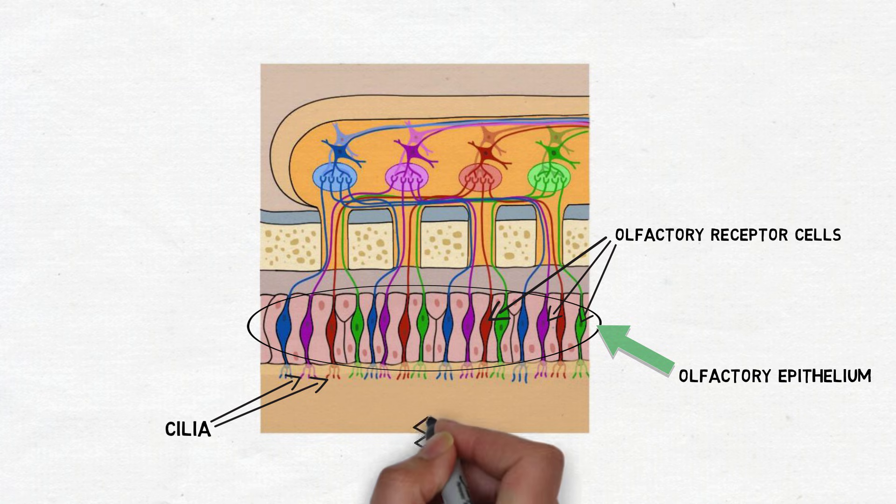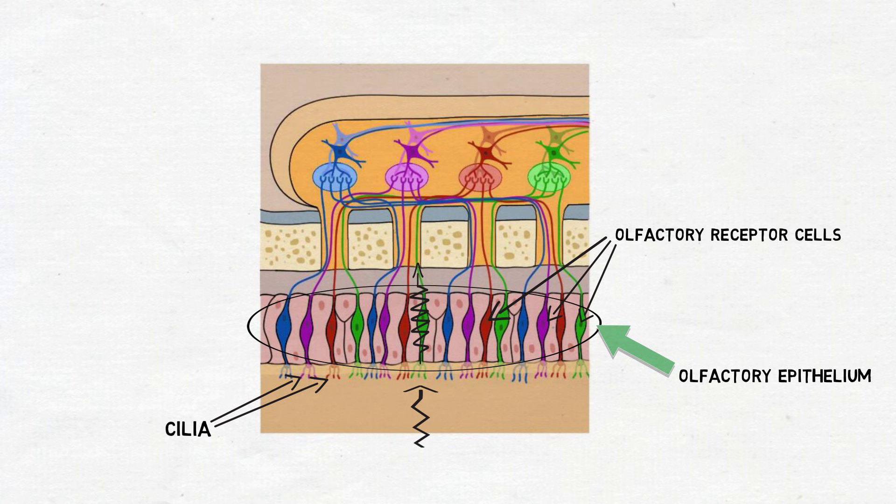When odorants enter the nasal cavity due to inhalation or by rising from the mouth during the chewing of food, they stimulate receptors on the cilia, depolarizing the olfactory receptor cells and initiating action potentials that travel down the axon of the receptor cell into an adjacent structure called the olfactory bulb.